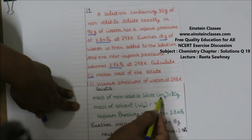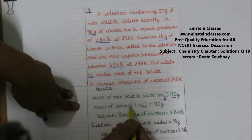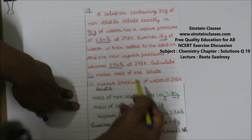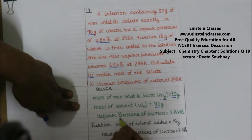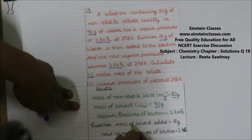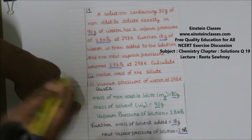Given to us: mass of non-volatile solute (taking it as B) is 30 grams, and the mass of solvent (water) is 90 grams. The vapor pressure of the solution in that case is 2.8 kilopascal. We then added 18 grams more solvent to the same solution, and the new vapor pressure of the solution becomes 2.9 kilopascal.